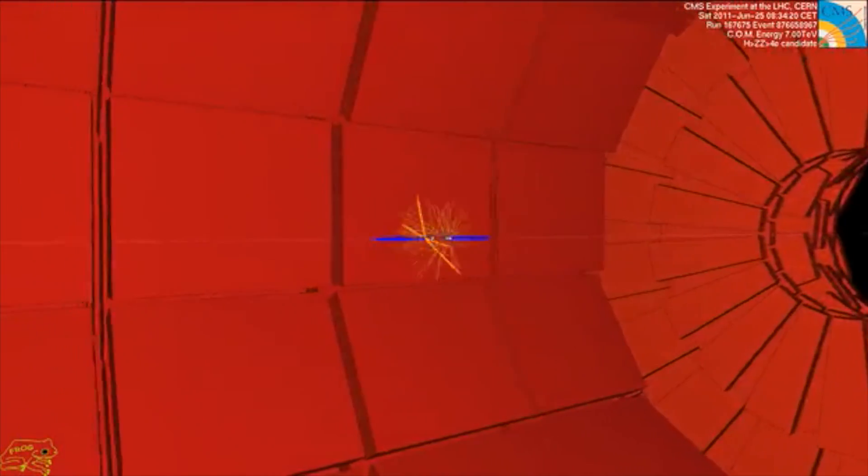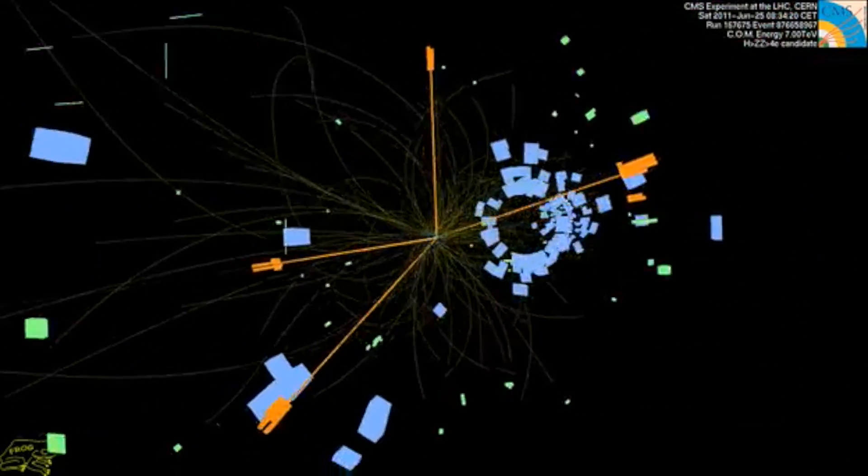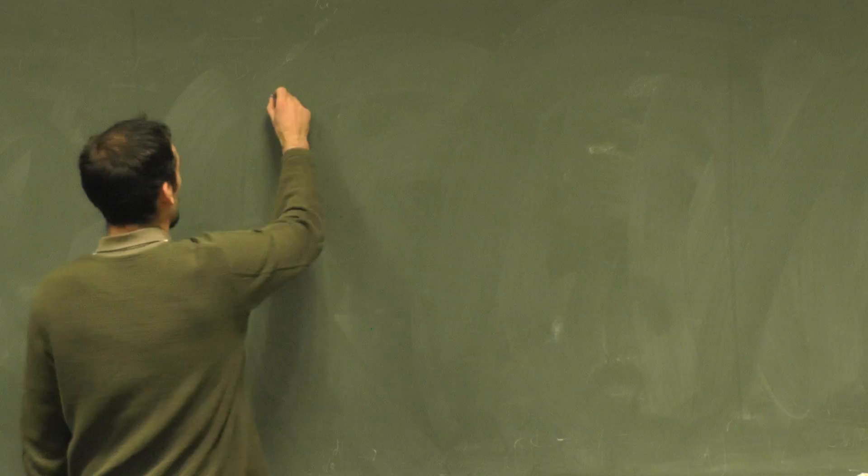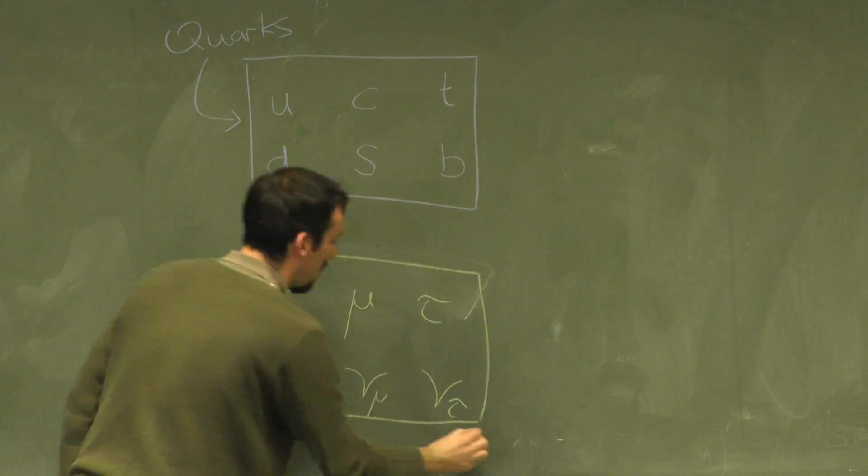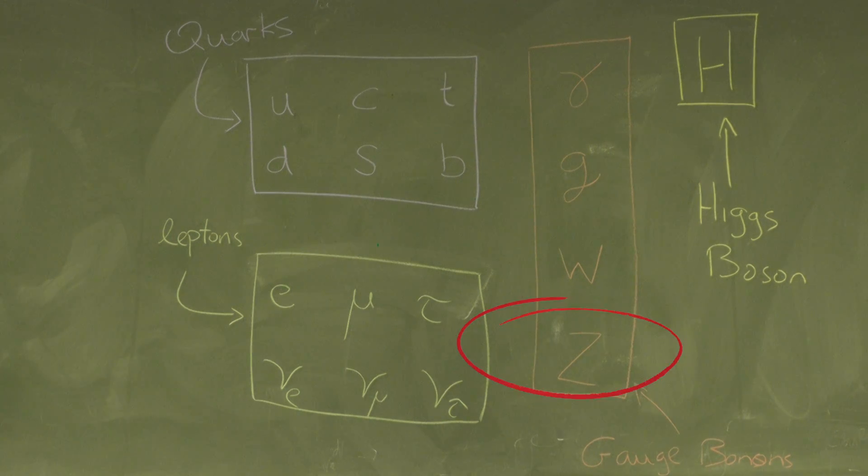In the case that they interact with each other, they can go on to make many more particles and many exotic particles whose properties we'd like to study. And one such particle is the Z boson. It lives for a very short time before decaying to more stable, long-lived particles that we can measure inside our detector.